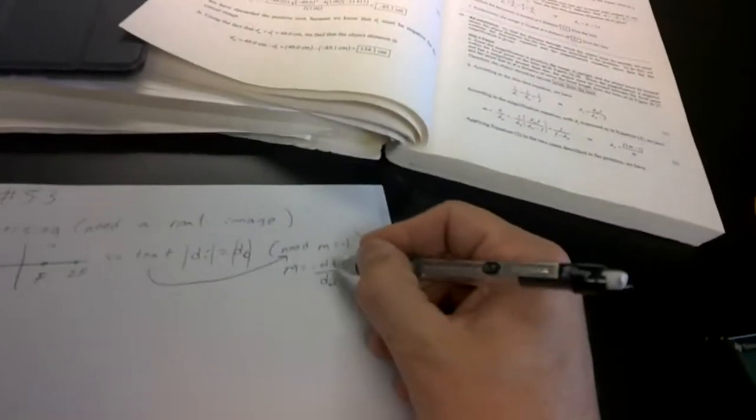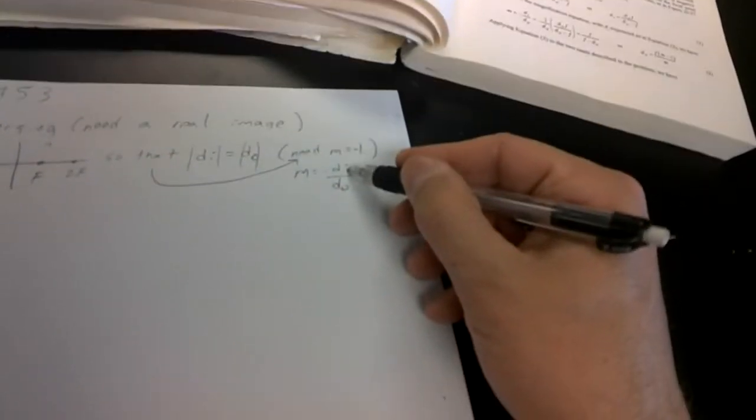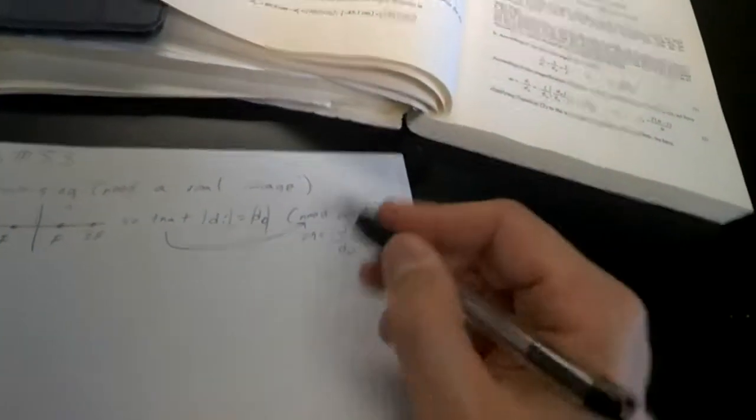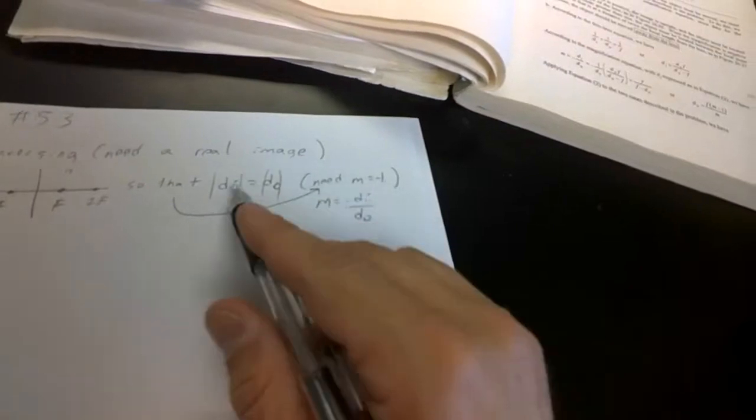Now what about the negative stuff? I have a real image, so when I plug in di it'll be a positive number, when I plug in do it's always a positive number, and then we have the negative out front so it works. I don't really need the absolute value here because these are both going to be positive values anyway for this setup. I've got my m equals negative one, so di equals do.